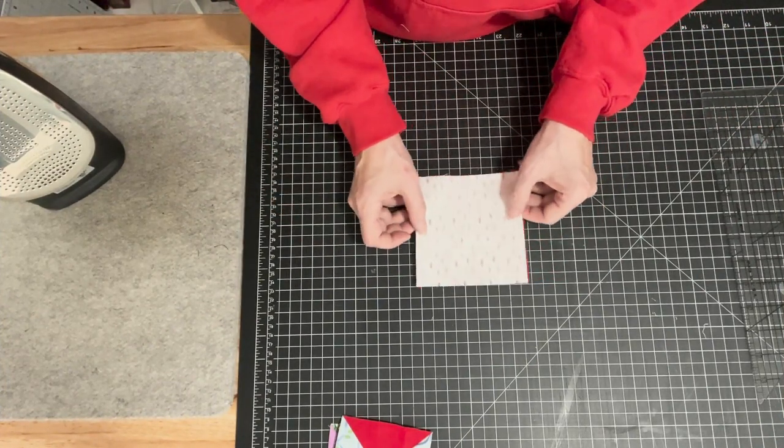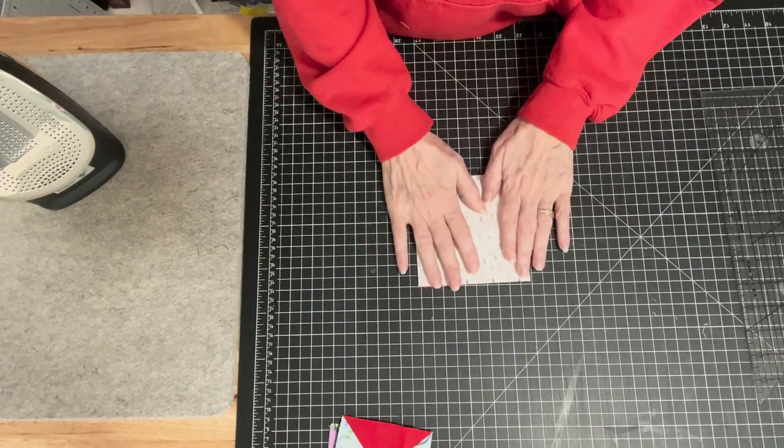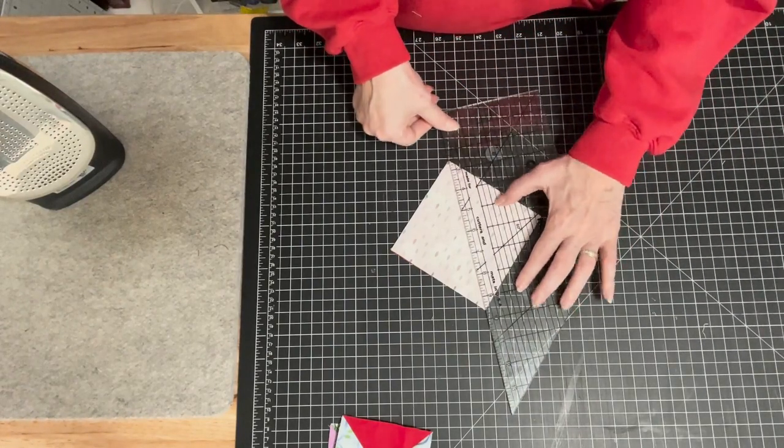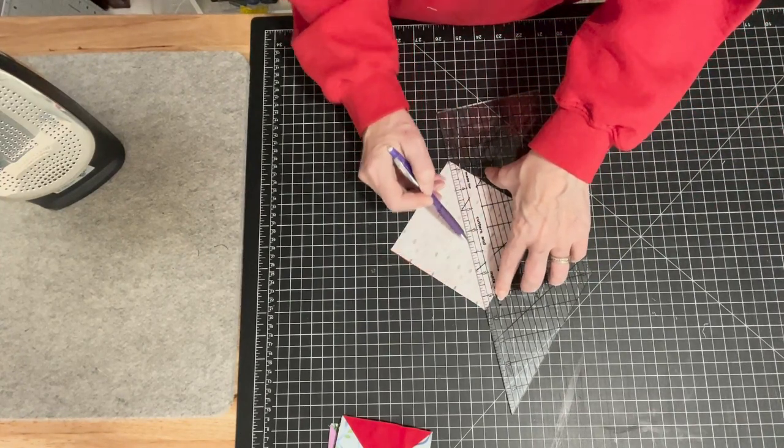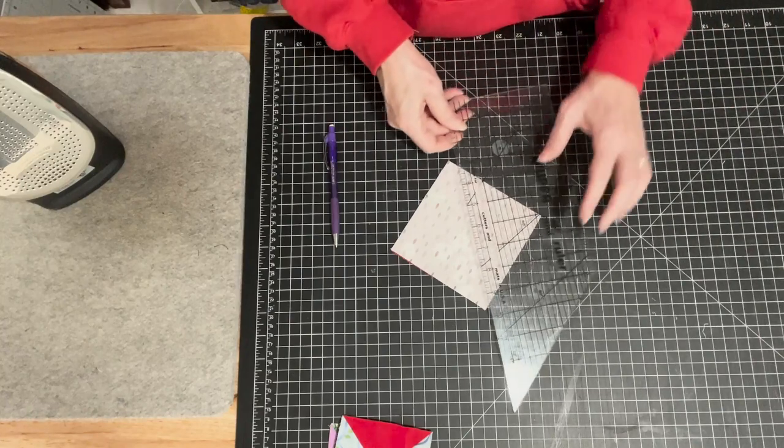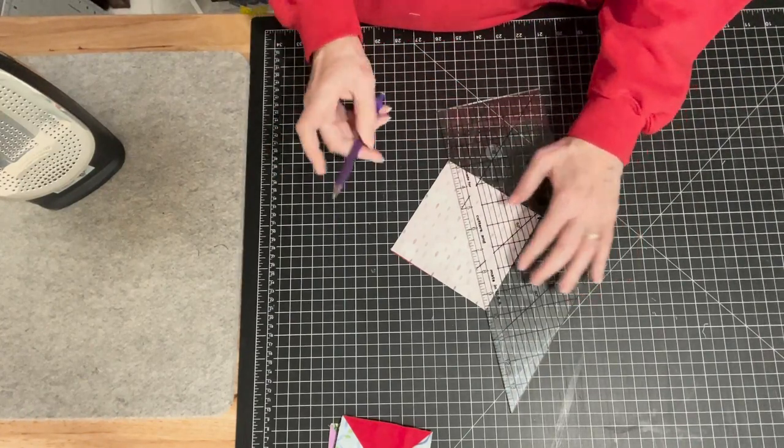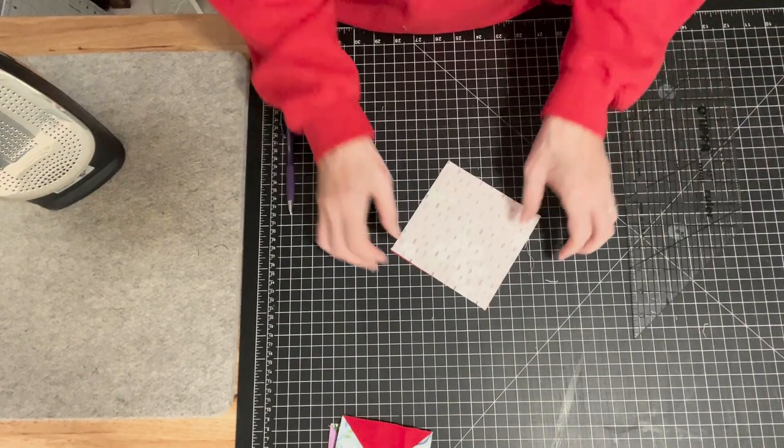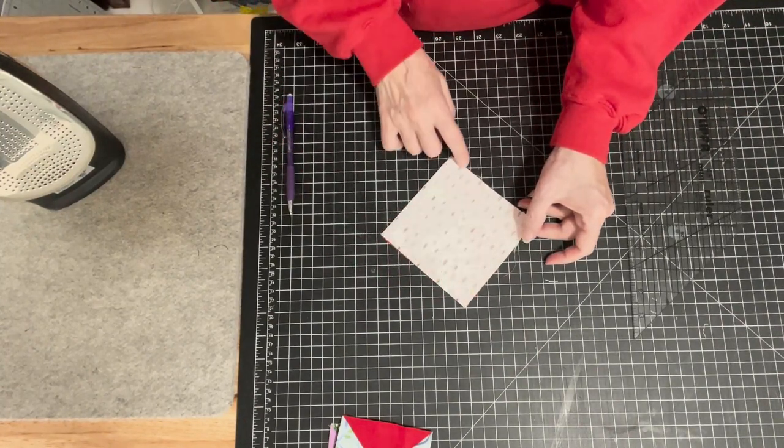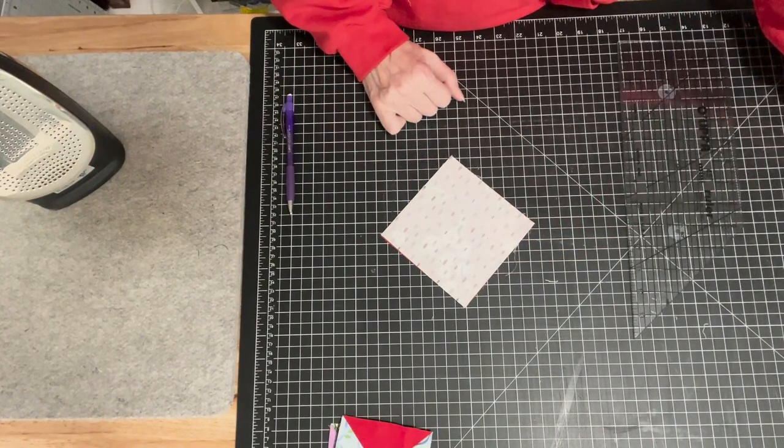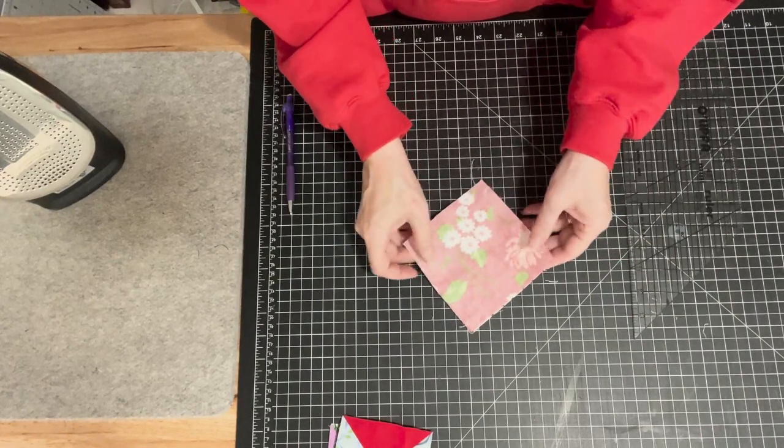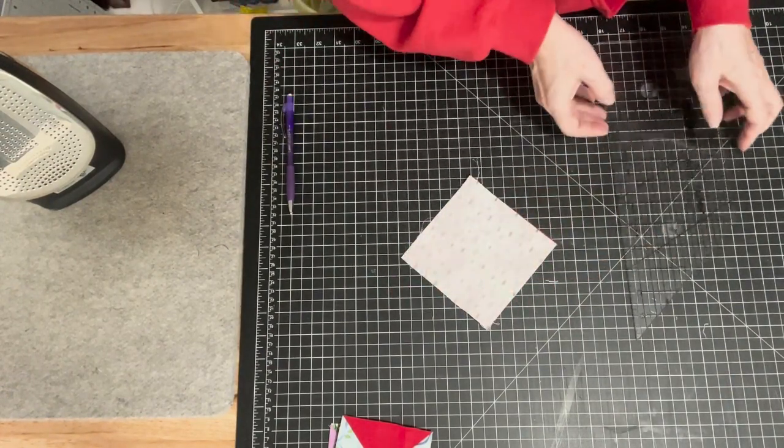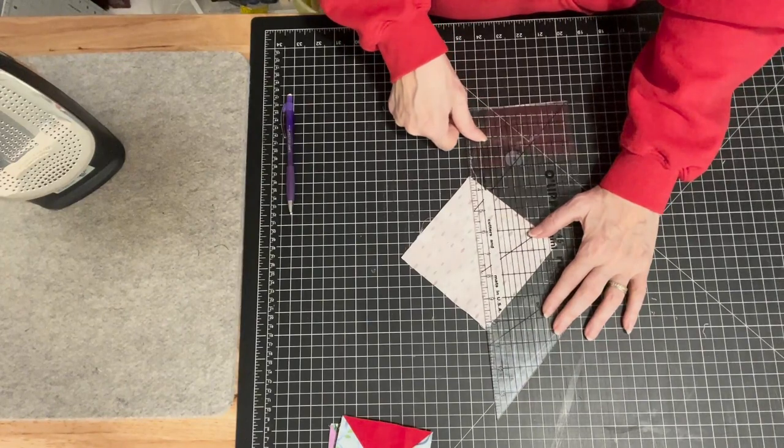The first thing you're going to want to do is put your two squares right sides together. I like to put the lightest color square right on top, and you are going to draw a line from corner to corner. Basically you're just going to be making a half square triangle. I'm going to draw a pencil line there, and then I'm going to sew a quarter inch on either side of that line.